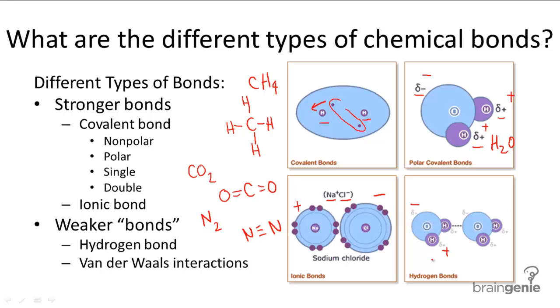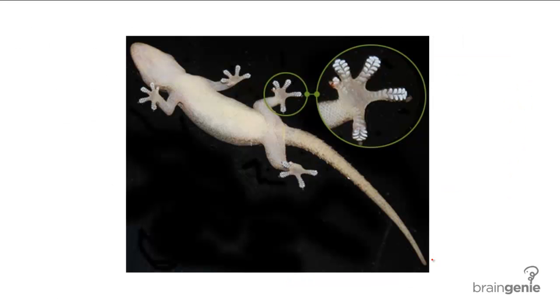When van der Waals interactions are very few, like if there's only one van der Waals interaction, it's very easily breakable. As we already said, it's the weakest of all chemical interactions. But do not underestimate their strength, because the strength of millions of van der Waals interactions is what allows a gecko to scale a wall.